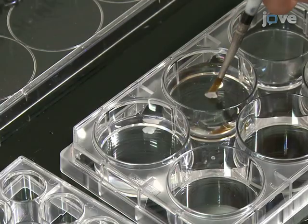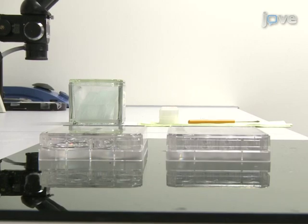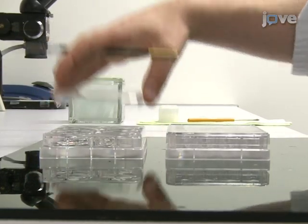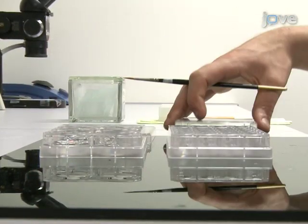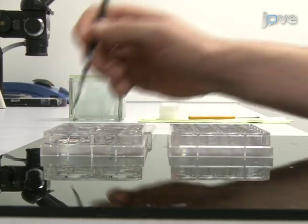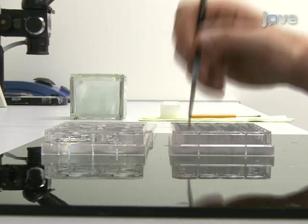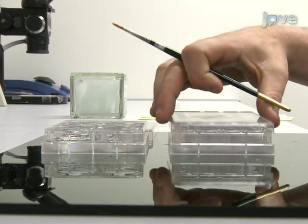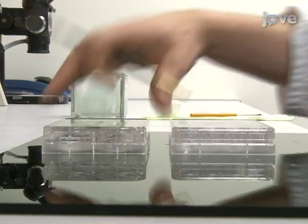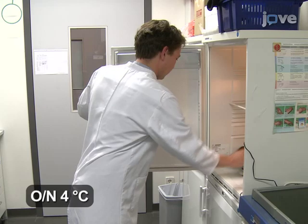Following incubation, rinse the slices thoroughly in PBS. Apply fluorescent anti-mouse secondary antibodies along with a biotin-binding protein streptavidin conjugated to a fluorochrome and incubate in a solution containing 3% normal goat serum, 0.1% triton X100, and 0.05% sodium azide diluted in PBS. Incubate overnight at 4 degrees Celsius.